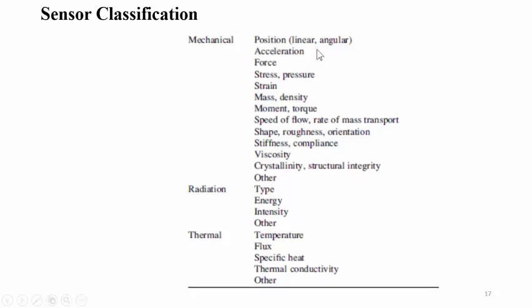For mechanical parameters, physical parameters in the mechanical field include position detection, acceleration detection, acceleration sensors, force sensors, stress and pressure sensors, strain gauge sensors, mass detection, density detection, moment sensors, torque detection, speed, rate of flow, object stiffness, object compliance, viscosity of a particular material, crystallinity, and structural integrity, along with other mechanical parameter-based sensor classifications.